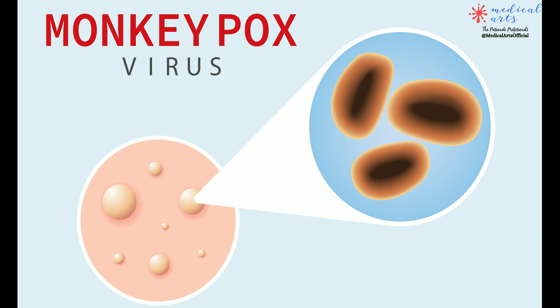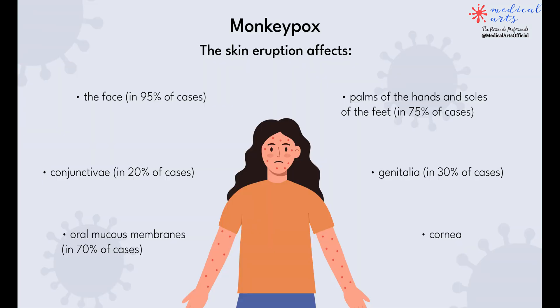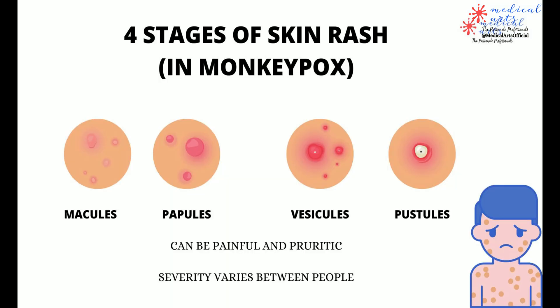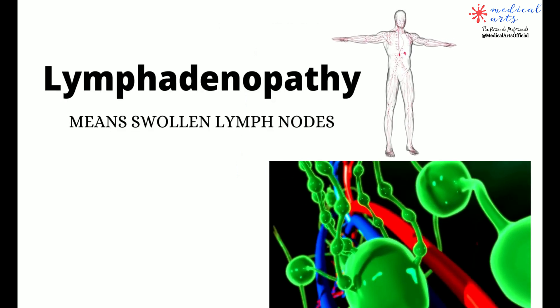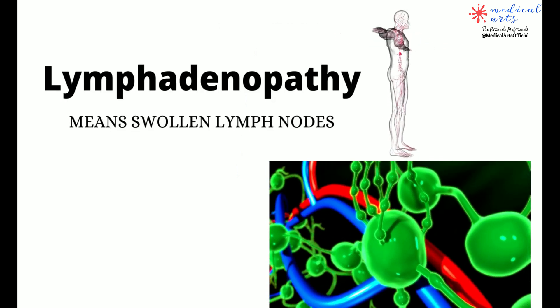Lesions typically begin to develop simultaneously and evolve together in any given part of the body. The evolution of lesions progresses through 4 stages: from macules, papules, vesicles, then pustules before crusting and resolving. Lesions are frequently painful and can be pruritic. The symptoms of monkeypox can be confused with the more common varicella-zoster virus infection. Lymphadenopathy is a prominent feature of monkeypox infection.